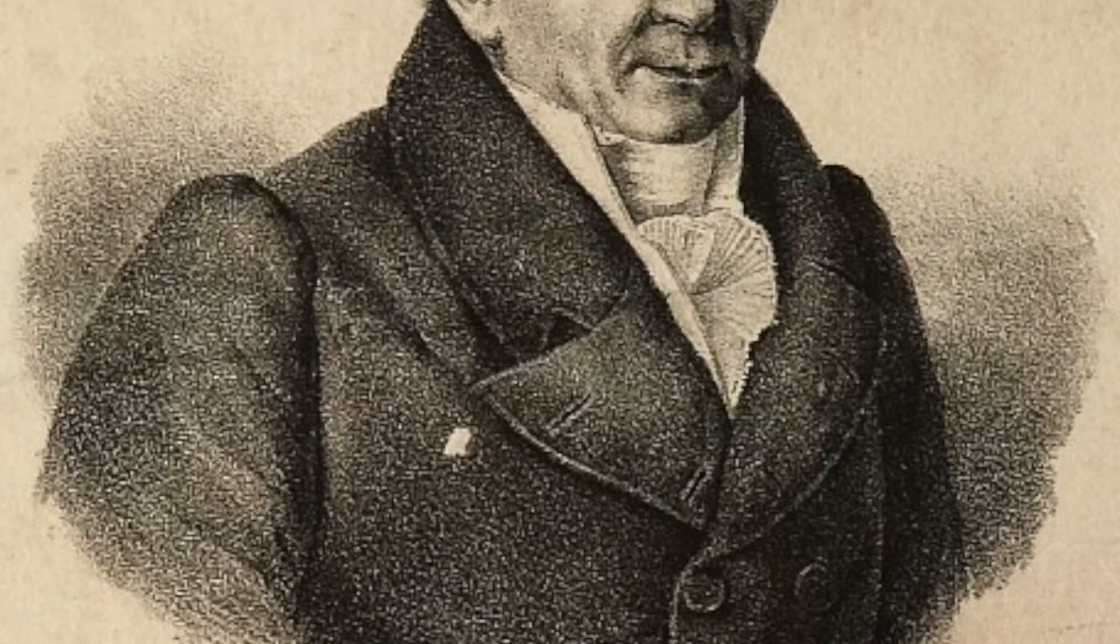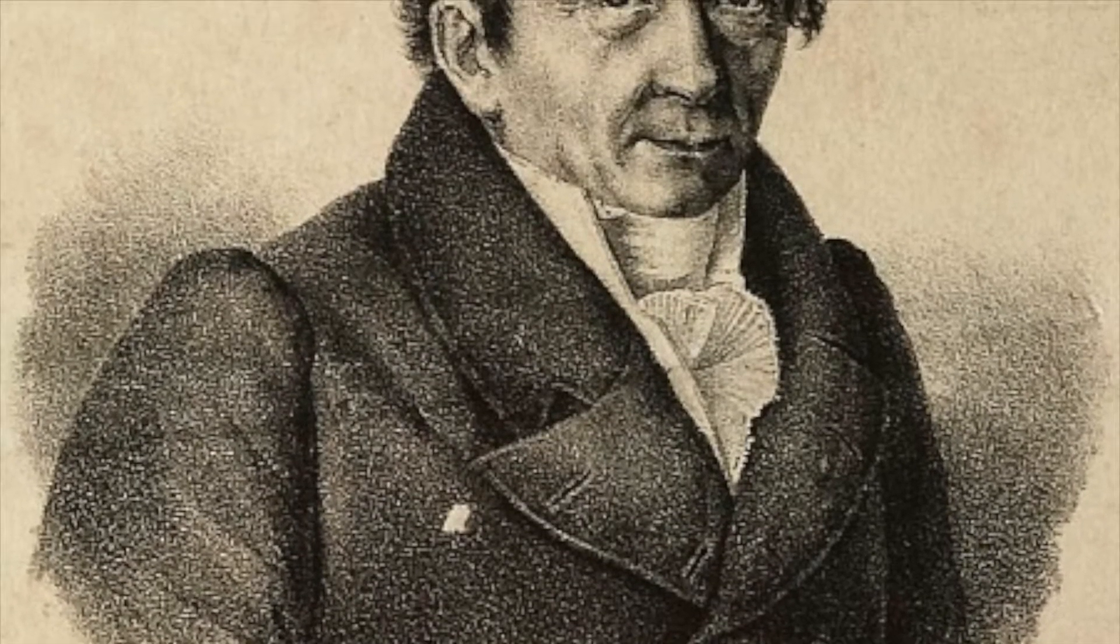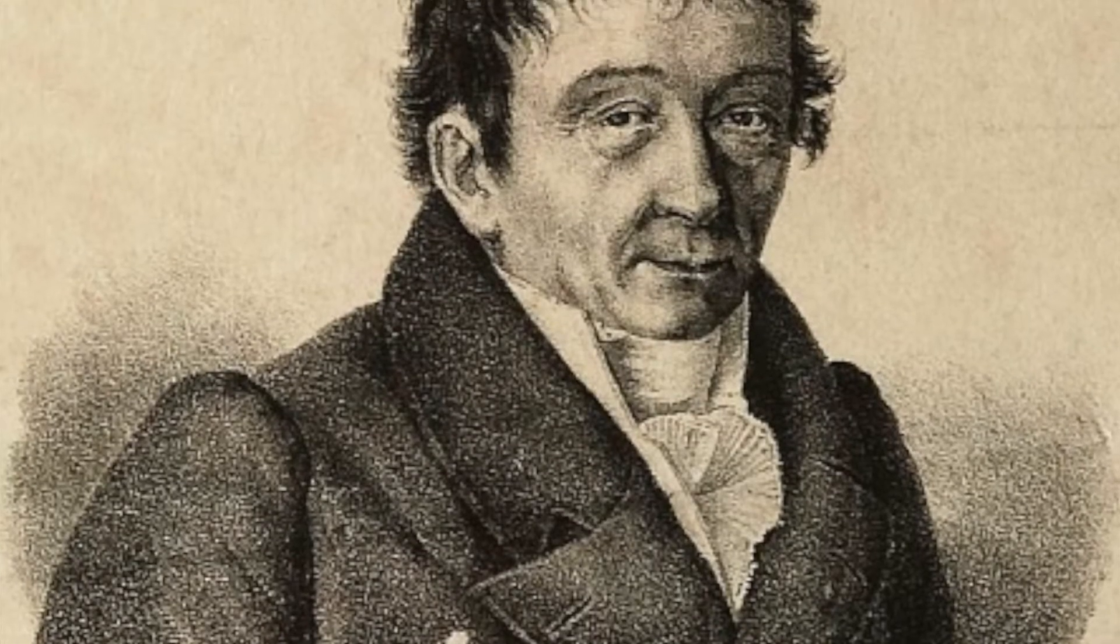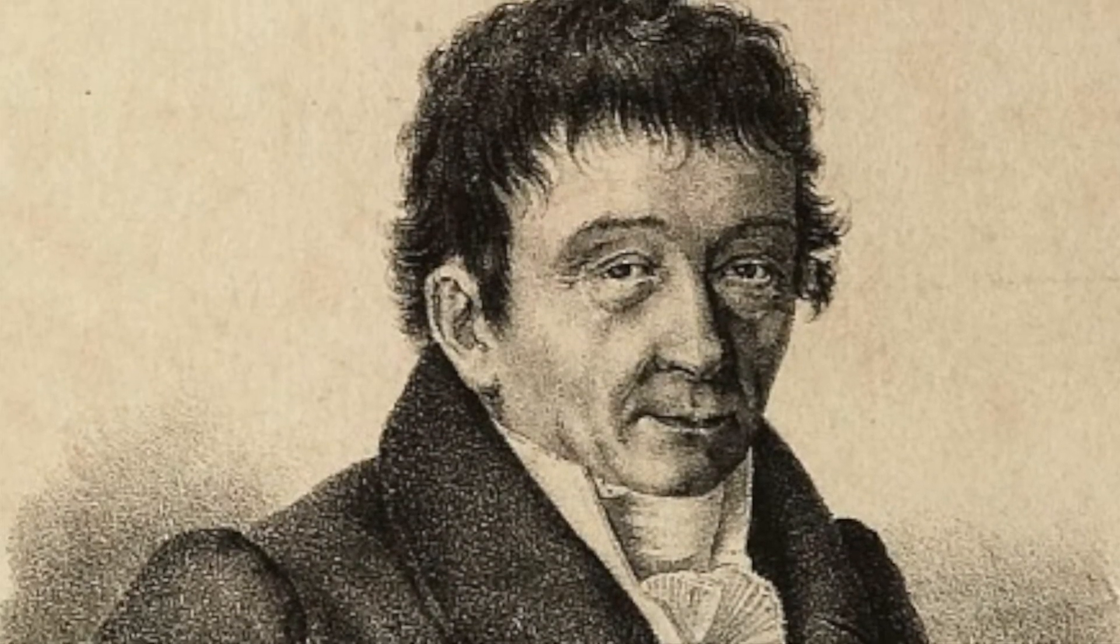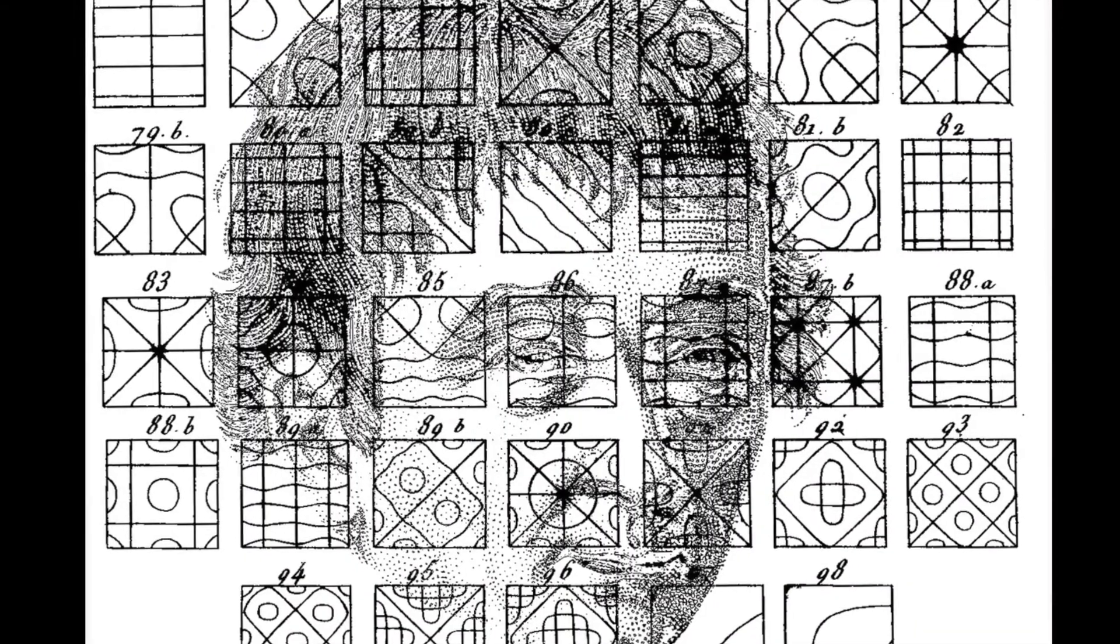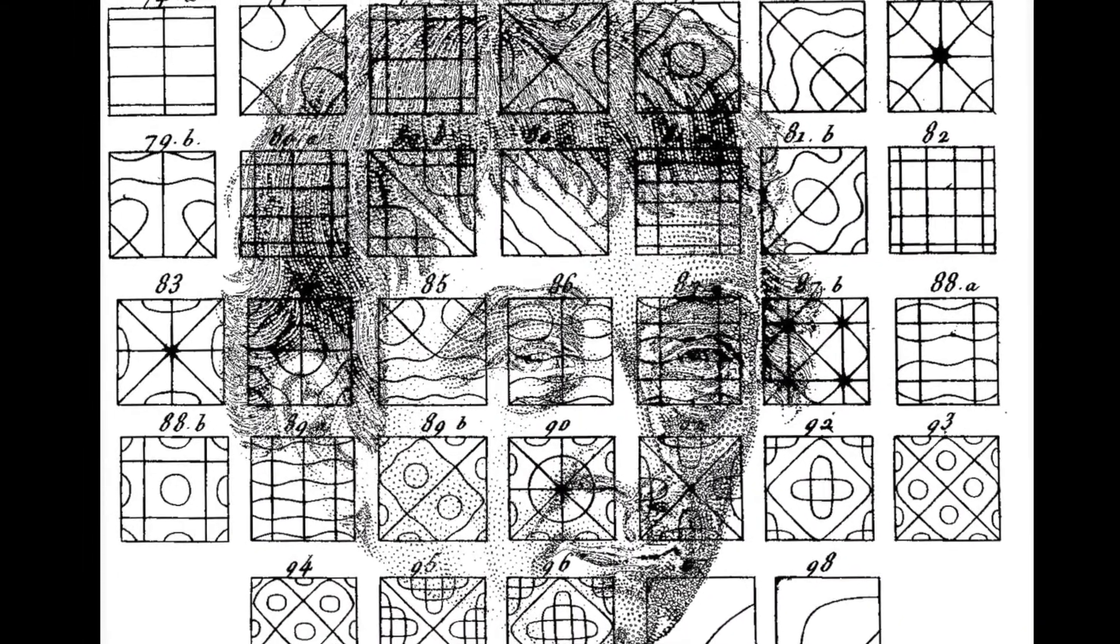Ernst Chladni was a German physicist and musician whose best known achievement was inventing a technique to show the various modes or shapes of vibration on a rigid surface, known as Chladni figures due to the various shapes or patterns created by the various modes.